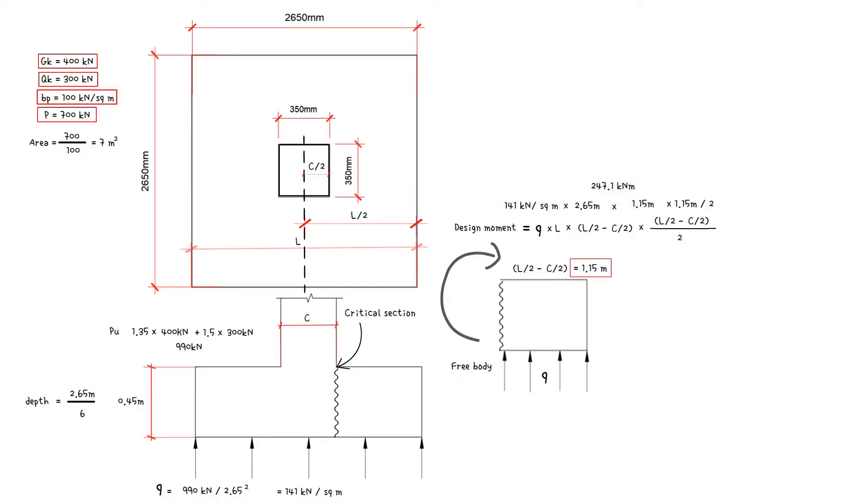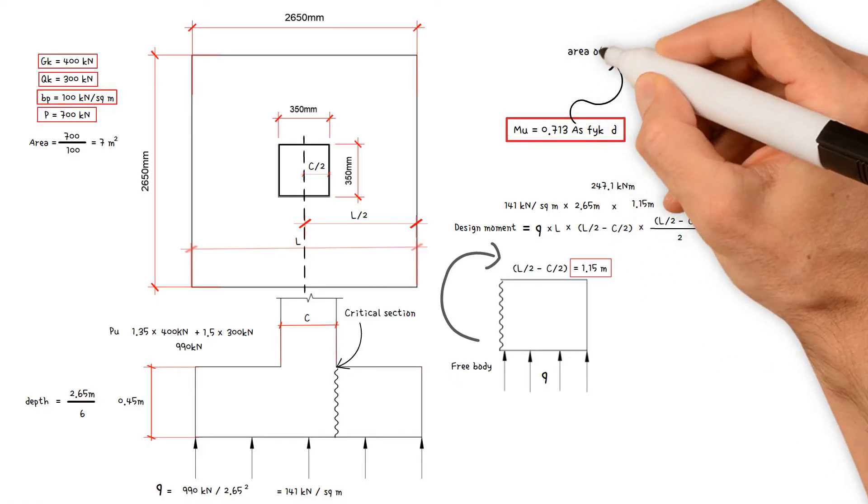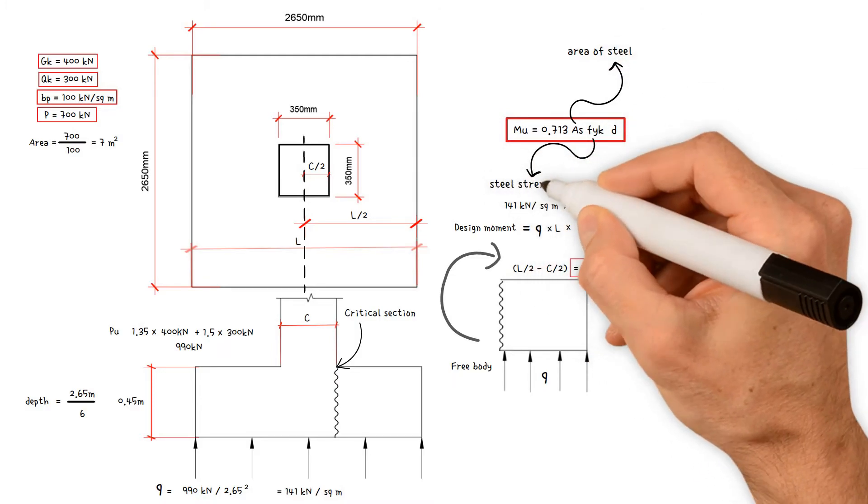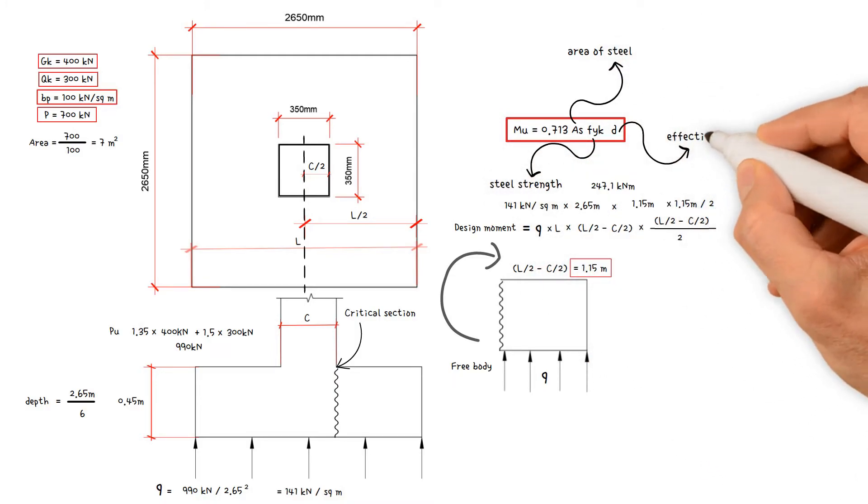An effective depth D is assumed and the tensile reinforcement is then determined as though the foundation was a rectangular beam of width L. We could conservatively use this equation to work out our reinforcement. Design moment equals 0.713 times area of steel, times steel characteristic strength, times the effective depth.